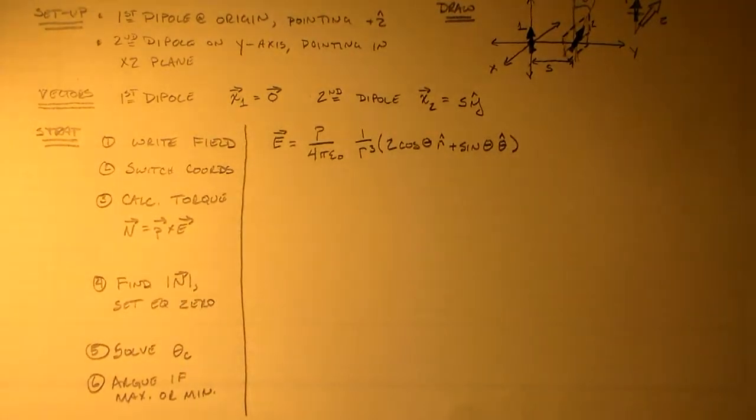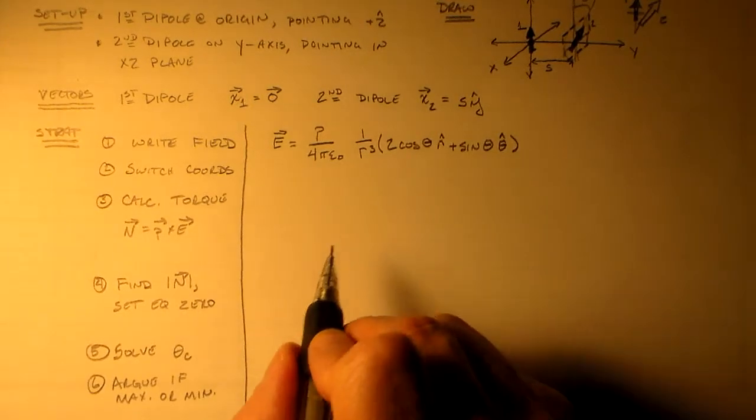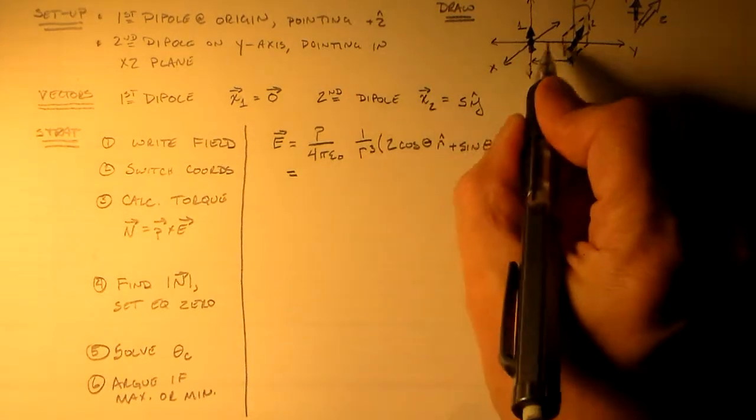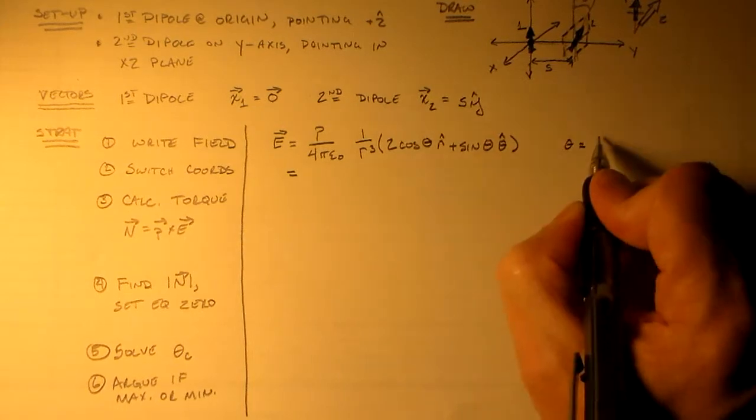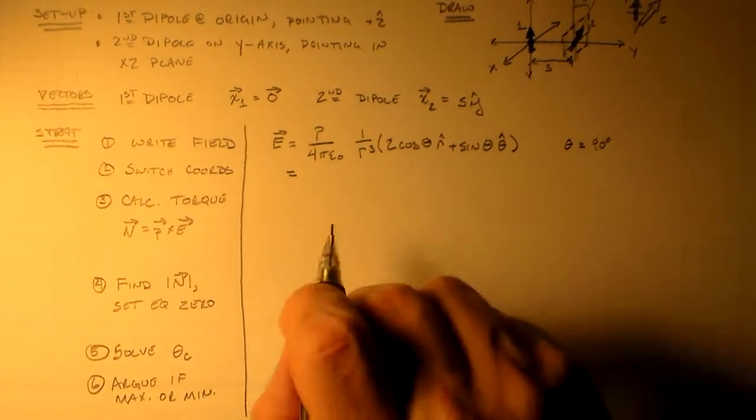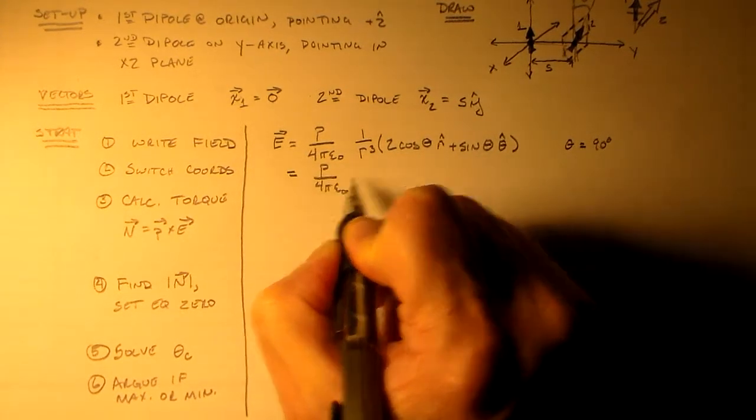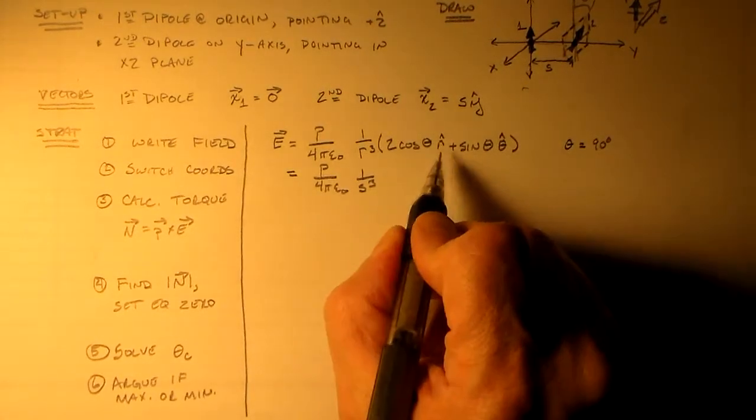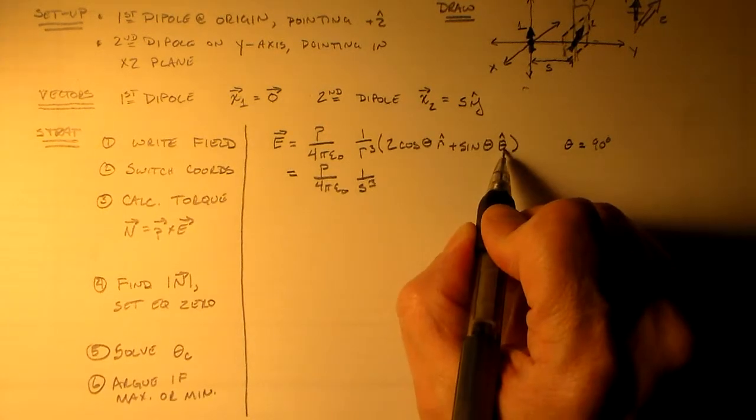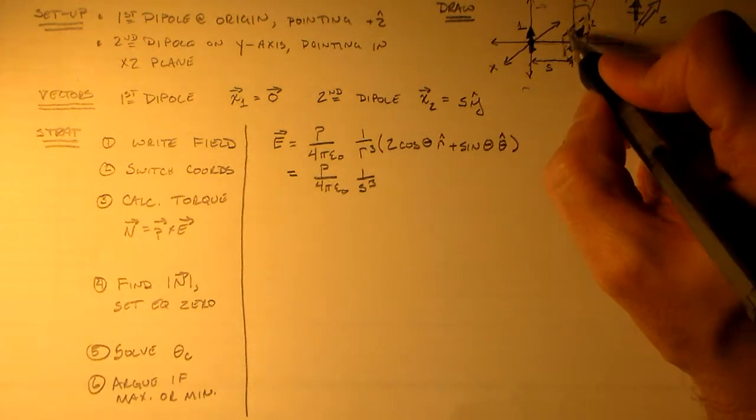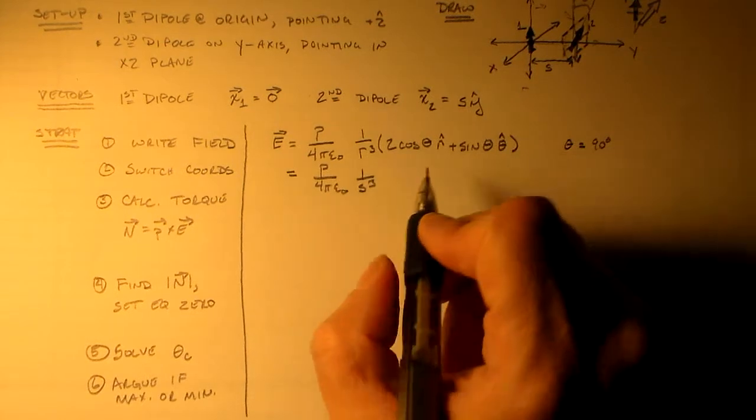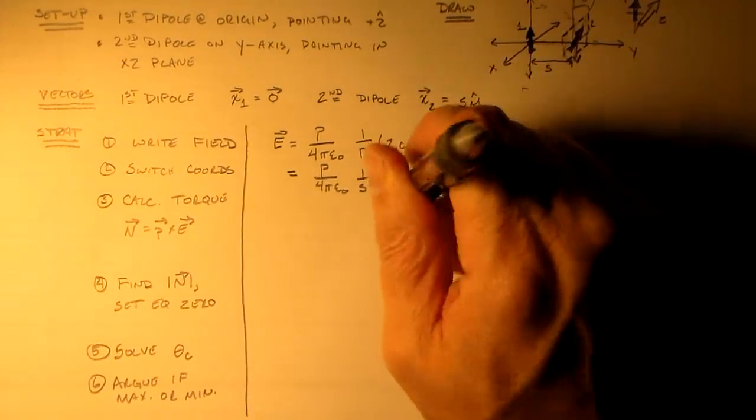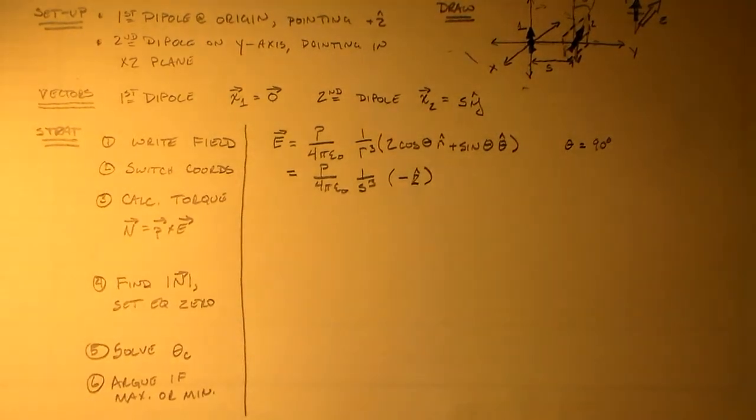But if we're assuming that everything has to be on the y-axis, then we're going to say that theta is equal to 90 degrees. And we could worry about phi, but phi doesn't show up in there. So we have p over 4 pi epsilon naught. r cubed is s cubed, right? We said the distance here is s. And in the r direction, we have no field. In the theta direction, and the theta is starting this way and coming down here, so it's straight down right now. So we've got everything we need in the theta direction, that's just the minus z direction. So we've got this guy in the minus z hat direction, and that's what we need to use to calculate the torque.